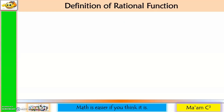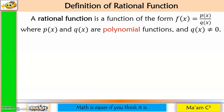Let us define rational function. It is a function of the form f(x) = p(x) / q(x), where p(x) and q(x) are polynomial functions, and q(x) is not equal to 0. The reason why q(x) cannot be equal to 0 is because dividing by 0 will make the function undefined.